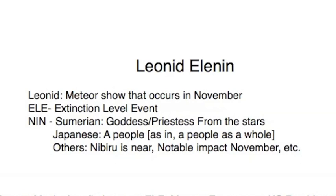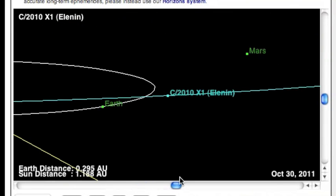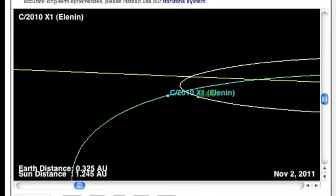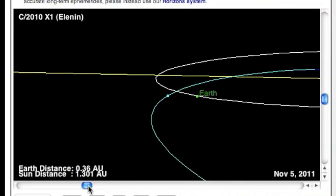Here's the short version. Leonid, his first name, is the name for a November meteor shower. If you break his last name into ELE and NIN, ELE is widely known to be Extinction Level Event. NIN has had many speculative meanings, and you can look them up pretty much anywhere. Our favorite is a Sumerian meaning, meaning goddess priestess from the stars. And this guy found a comet that will be here this fall, and that has at least one coincidence with dire earthly consequences.